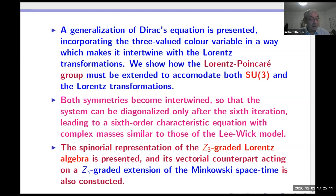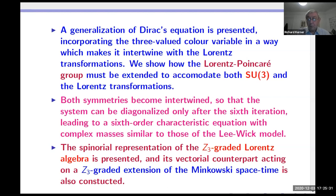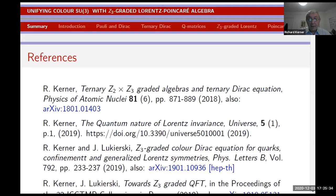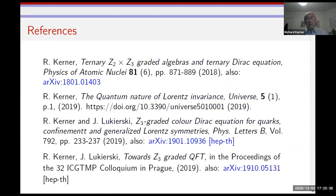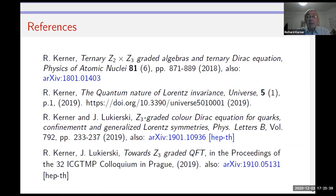Z3-graded means that instead of Z2, which is based on two with one generator that is minus one and whose square is one, here the generator is a cubic root of unity and its square is also a cubic root of unity but a different one, and only the cube equals one. So you have three grades. What I will be exposing here is based on common work with Jesus from Wrocław University in Poland, and there are publications on arXiv if anybody is interested.